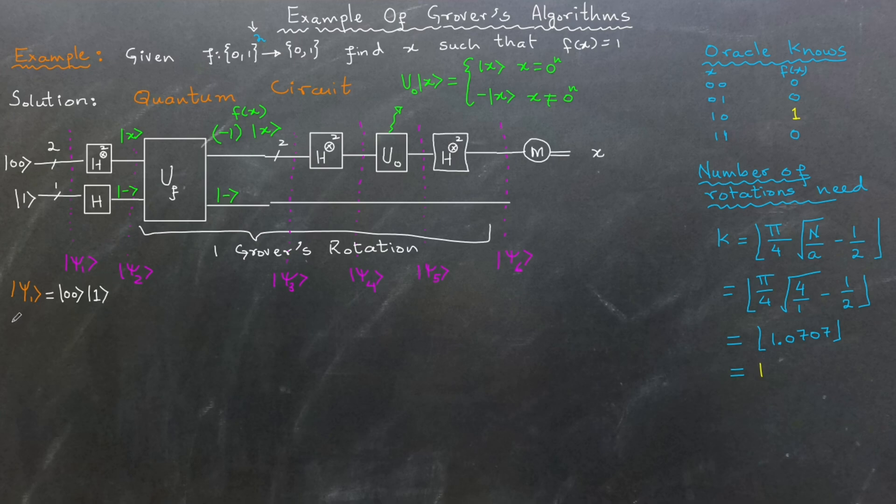In the second stage, |ψ2⟩, we apply Hadamard gates to both registers. This operation transforms the first register into equal superposition of all possible input states, represented as 1/√4 multiplied by equal superposition of all inputs from |0⟩ to |3⟩.